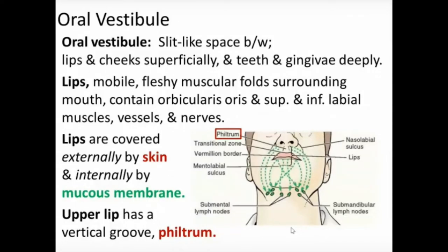The lips contain the orbicularis oris and the superior and inferior labial muscles, along with vessels and nerves that supply these muscles for their function. Nerves also supply the inside of the lips — the mucous membrane — and the outside of the lips — the skin.